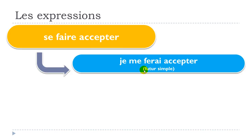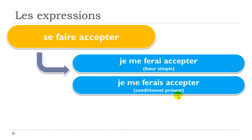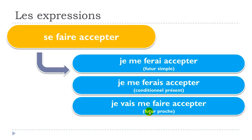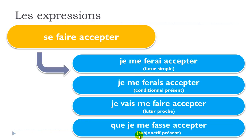Let's conjugate this expression in different tenses. Futur simple: 'je me ferai accepter'. Conditionnel présent: 'je me ferais accepter' — phonetically very similar, but note the extra 's' in writing. Futur proche: 'je vais me faire accepter'. Subjonctif présent: 'que je me fasse accepter'.